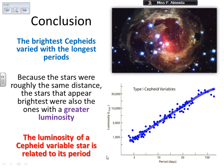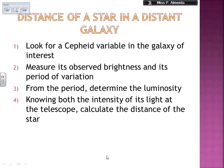These luminosities come in multiples of the sun's luminosity. I can go up to 30,000 times the luminosity of the sun when I have a period of about 100 days. So the brightest Cepheid variables vary with the longest periods, and because the stars are roughly the same distance, the stars that appear brighter are also the ones with the greater luminosity. The luminosity of a Cepheid variable star is related to the period. So what I can do is look at a Cepheid variable and check the period of variation.